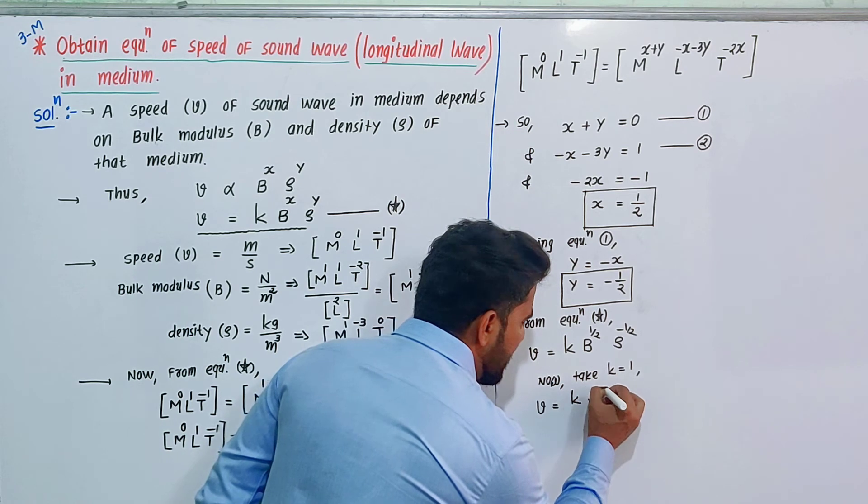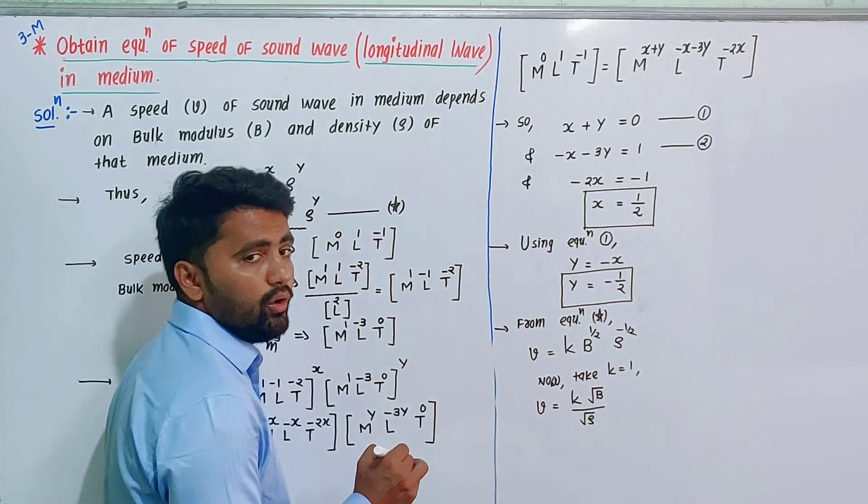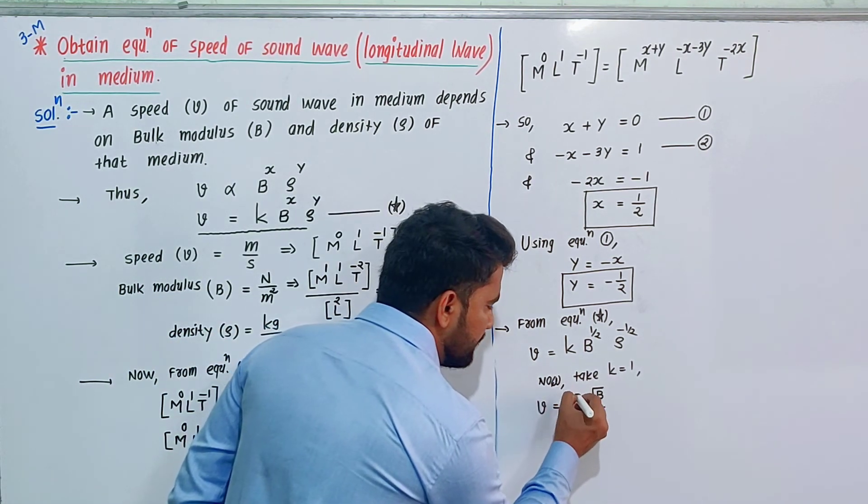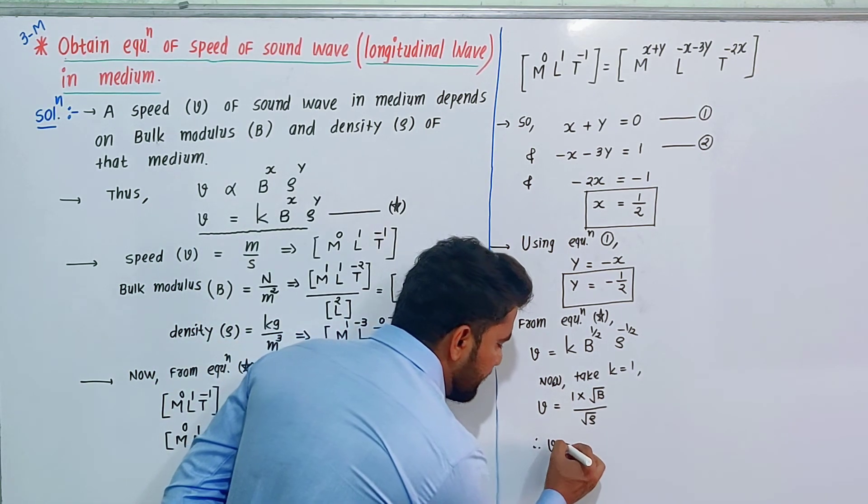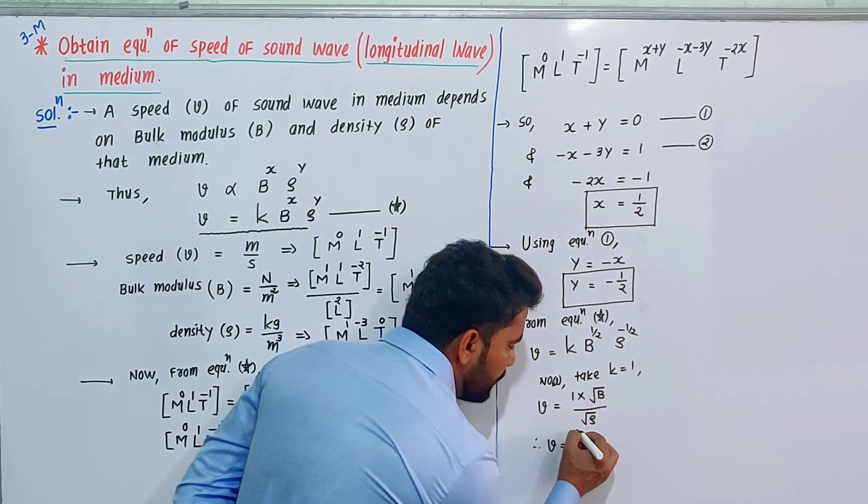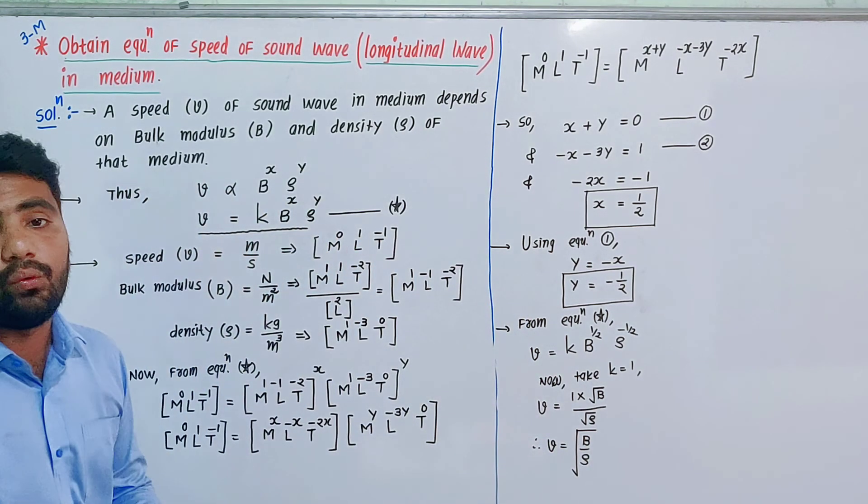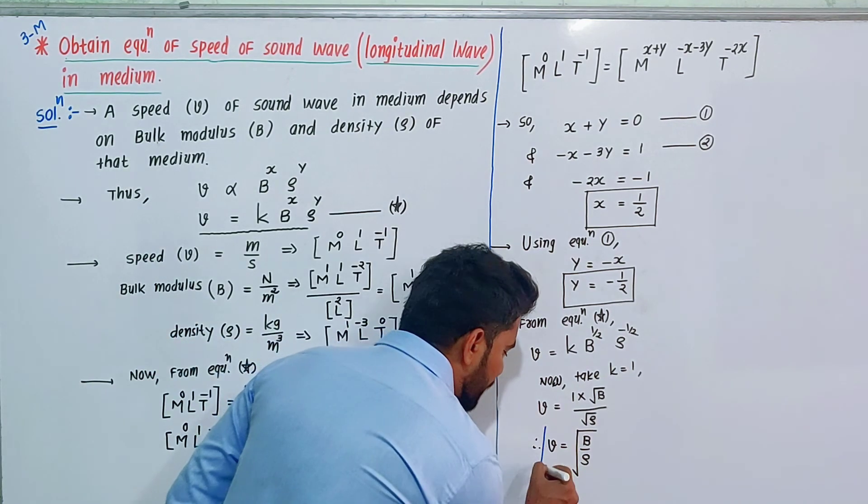Take K equals one. So V equals root B divided by root ρ, that is V equals root of B by ρ. Clear?